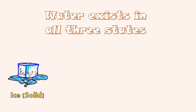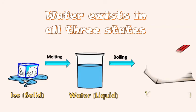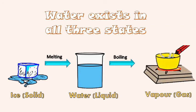Water exists in all three states. Ice, which is solid, melts to form water, which is liquid. Liquid, upon boiling, forms water vapor, which is gas. Gas condenses to form water. Water freezes to form ice.